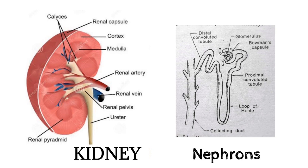Renal tubules consist of four parts. First, the proximal convoluted tubule, situated in the cortex. Second, the loop of Henle, present in the medulla. Third, the distal convoluted tubule, present in the cortex. Fourth, collecting tubules which pass through the medulla and open into the pelvis of the kidney.